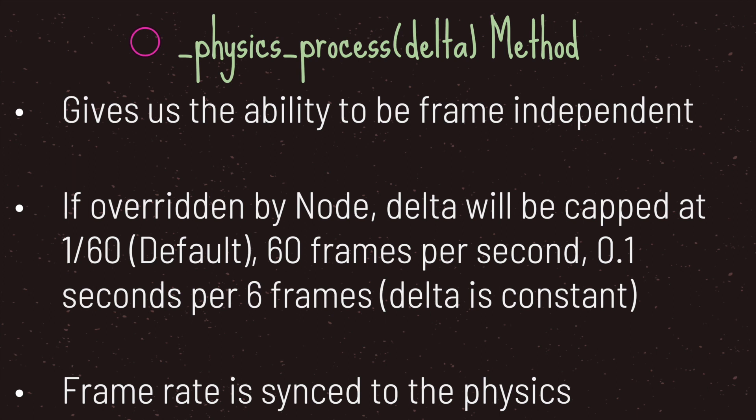The second method is the physics process virtual method. This virtual method also gives us the ability to be frame rate independent. If overridden by a node, delta will be capped at one-sixtieth of a second — this is the default value. That means we run the script 60 times a second and get a value of 0.1 seconds per 6 frames. This delta value is constant, and the physics process is synced to the physics processing in the main loop.